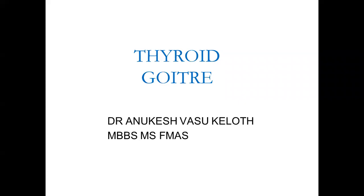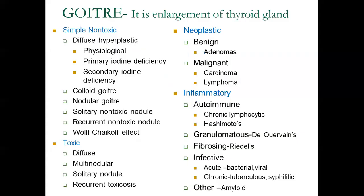Today we're going to talk about thyroid gland goiter. We have previously discussed the anatomy of thyroid; now we'll discuss goiter. Goiter simply means the enlargement of the thyroid gland. It includes a vast spectrum of disease from simple swelling to neoplastic, inflammatory, and infective swelling. The classification of goiter includes simple non-toxic goiter, toxic goiter, neoplastic goiter, and inflammatory goiter.